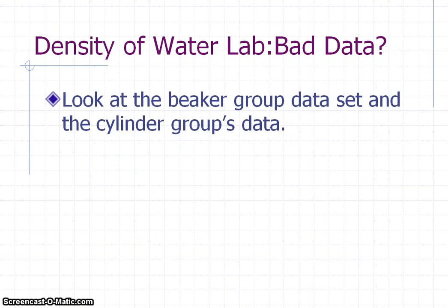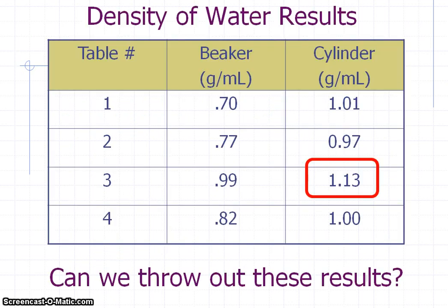Now, in our results that we've been looking at, we had that one data point — the 1.13 — and we're a little curious: can we throw this away or not? So go ahead and do the Q-test using just the cylinder people's information and see if we can throw that result out. We'll talk about our answer in class the next day. Have fun.